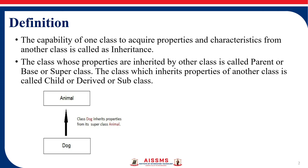What this means is that whenever we use inheritance, the properties — members and member functions, or in other words, the data and functions of a base class — are available in the new derived class. That is why we say it is reusable.